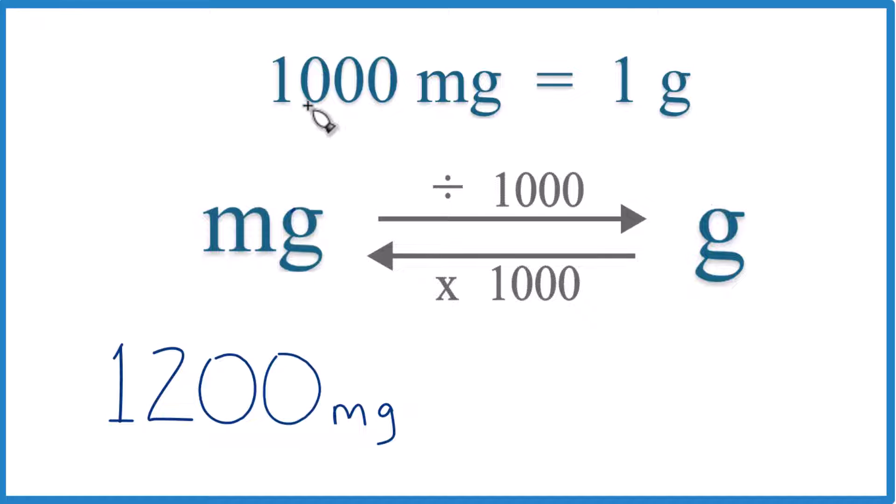You need to know that there are 1,000 milligrams in 1 gram, or you could say 1 gram equals 1,000 milligrams. This is what we call a conversion factor, and we use this when we go from milligrams to grams or grams to milligrams.